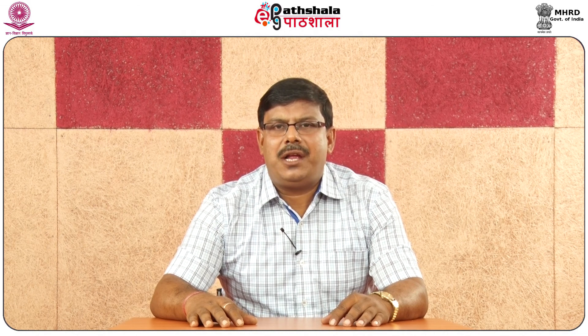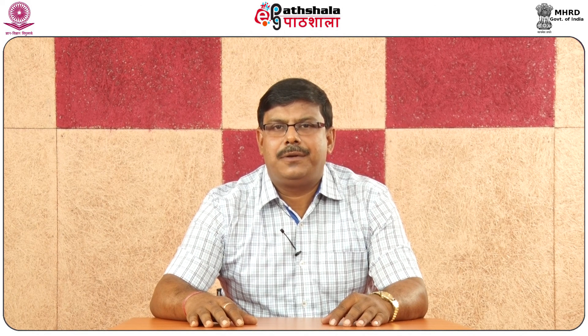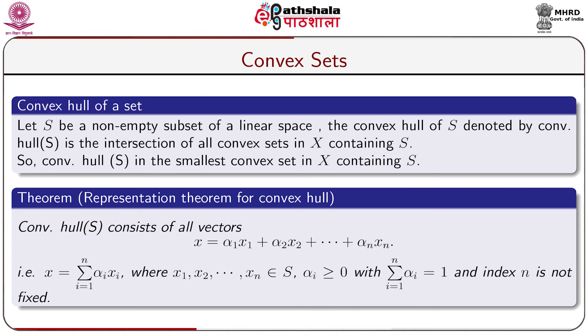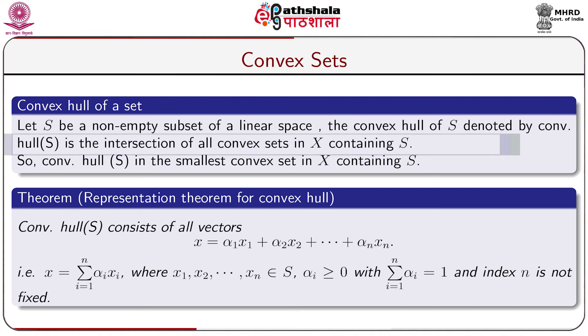Up to this point we have learned what a convex set is in a linear space, and that open and closed spheres are convex sets, and that the intersection of any number of convex sets is again convex. We shall now discuss the convex hull of a set. The convex hull of a non-empty subset S of a linear space X, denoted conv(S), is the intersection of all convex sets in X containing S — it is the smallest convex set in X containing S.